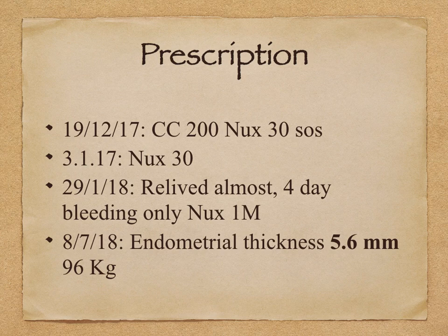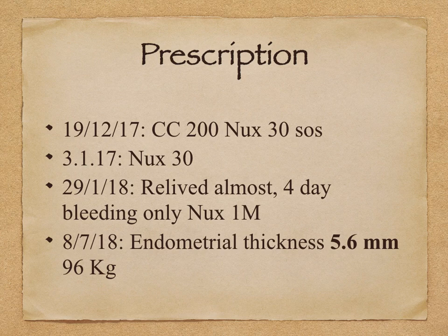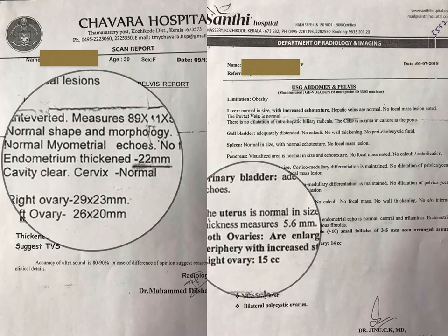After one month, the patient came to our OPD and the complaint was almost relieved. Now the patient had only four days of excessive bleeding. We prescribed one dose of Nux vomica 1M and conducted a USG. The endometrial thickness reduced to 5.6 mm and the weight of the patient is 96 kg — still need to reduce the weight. So with the help of the remedy Calcarea carb in this case, we got the endometrial thickness down from 22 to 5.6 mm.